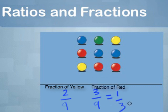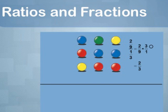This is also a part-whole ratio. If we divide the fraction of yellow marbles, 2 ninths, by the fraction of red marbles, 1 third,